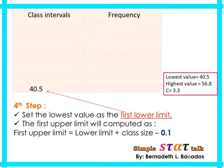In the previous example with whole-number data, the first upper limit was obtained by lower limit plus class size minus 1. But in this second example, the data set has one decimal place, so we subtract 0.1 instead. Therefore, the first upper limit is 40.5 + 3.3 − 0.1 = 43.7.